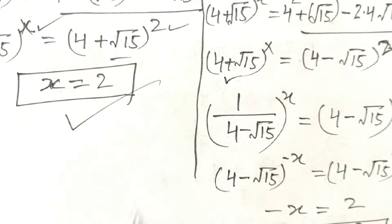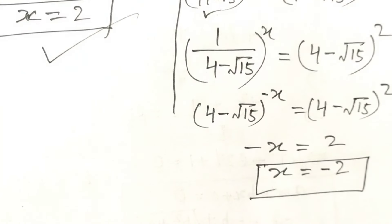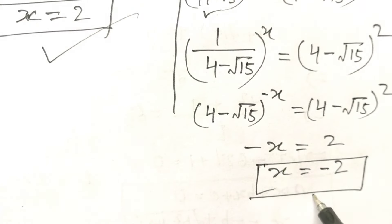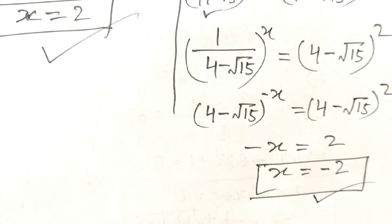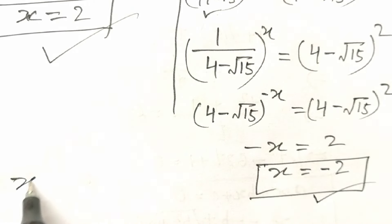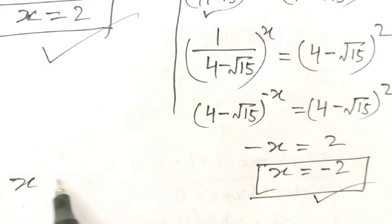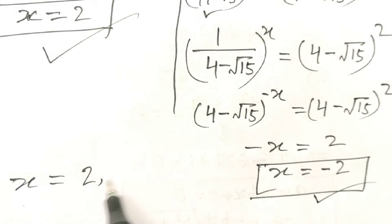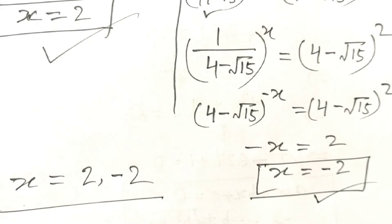So x = 2 and x = −2. Okay friends, thank you.